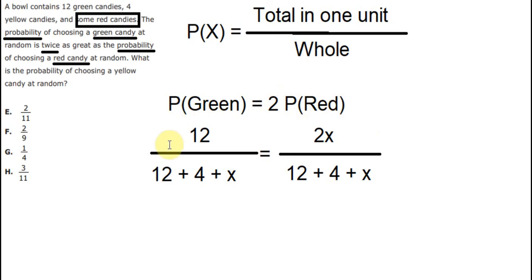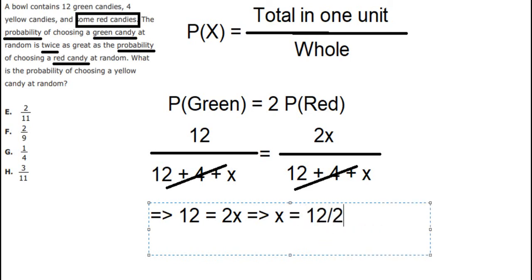Now you can see that we have the denominator. We can simplify, and we have the equation in here. We find the x in here. So we know that there are 6 red candies in this situation.